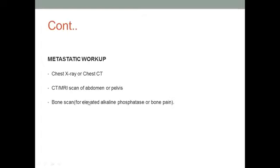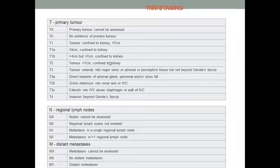The TNM classification: T1 is a tumor 7 centimeters or less — T1a is less than 4 cm, T1b is 4 to 7 cm. T2 is more than 7 cm but confined to the kidney. T3 is tumor extending outside the kidney: T3a involves renal veins or perinephric tissue, T3b goes into the renal vein or IVC, and T3c extends into the IVC above the diaphragm or invades the IVC wall. T4 is invasion beyond Gerota's fascia. N1 is a single regional lymph node, N2 is more than one. M0 is no metastasis and M1 is distant metastasis.